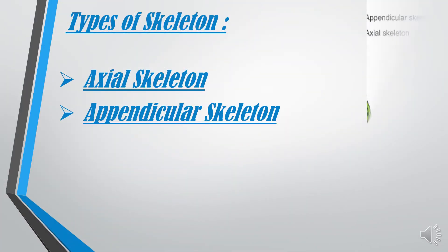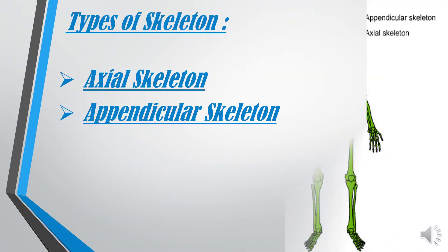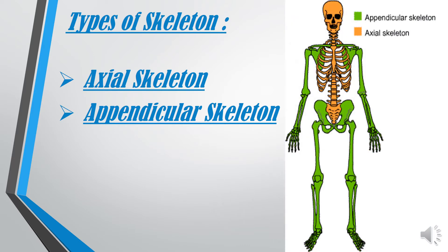Now comes the types of skeleton: axial skeleton and appendicular skeleton. In the diagram, the green color represents the appendicular skeleton, while the skin color represents the axial skeleton.